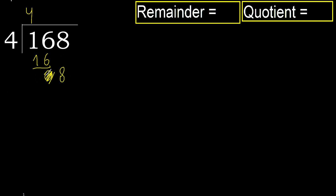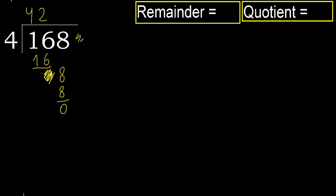Bring down 8. 4 multiplied by 2 is 8, it is not greater. 8 minus 8 equals 0. There is no next number, therefore we finish.